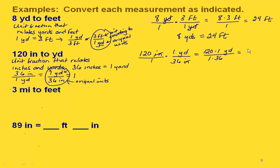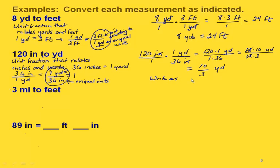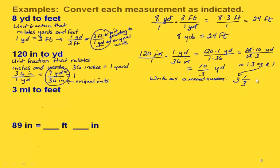Let's simplify — 120 is 12 times 10, and 36 is 12 times 3. We can cancel out the 12, giving us 10 thirds of a yard. Since we normally write U.S. measurements as mixed numbers, we divide 10 by 3, which gives 3 with a remainder of 1. The whole number part comes from the quotient, and the remainder goes in the numerator. So we get three and one-third yards.